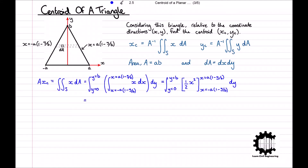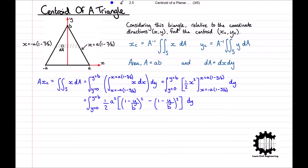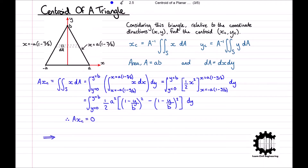Integrating X with respect to X gives half X squared, evaluated with limits X equals minus A(1 minus Y/B) and X equals A(1 minus Y/B), which is then integrated with respect to Y from 0 to B. Substituting in the limits results in half A squared times [(1 minus Y/B) squared minus (1 minus Y/B) squared], which equals 0. So A times XC is equal to 0, and as expected XC is equal to 0 — the centroid must lie along the vertical Y axis.